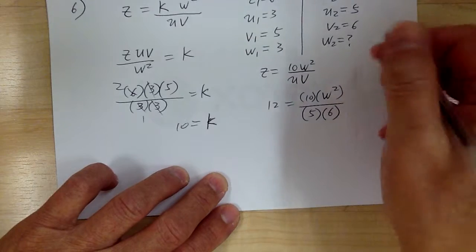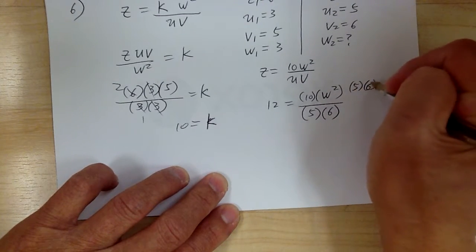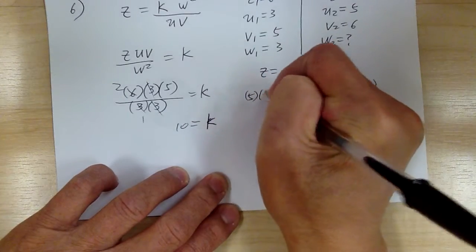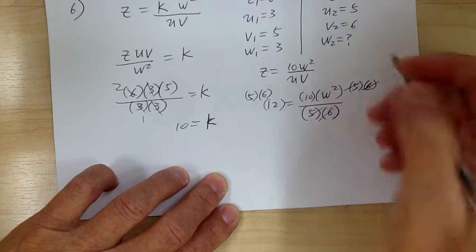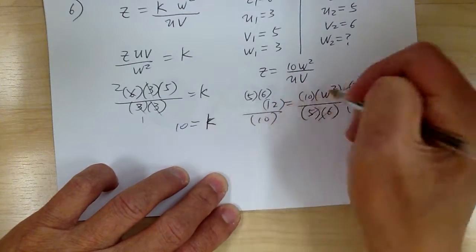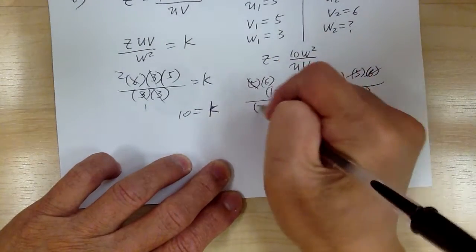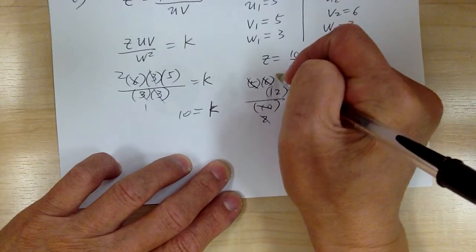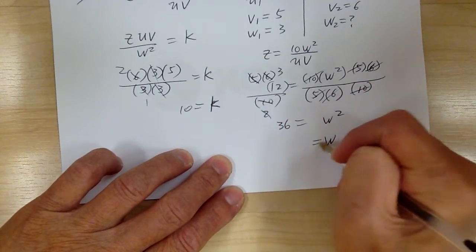So to solve for that, let's go ahead and multiply by 5 and 6. Multiply by 5 and 6. So this cancels with that. And then to get rid of the 10, you divide by 10 on the bottom. So this will cancel out. So w squared will equal to, let's cancel this. So w squared equal to 36. So w equal to 6.